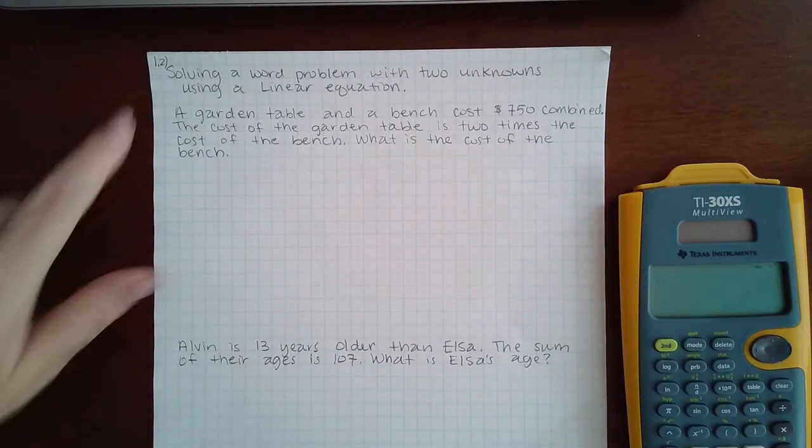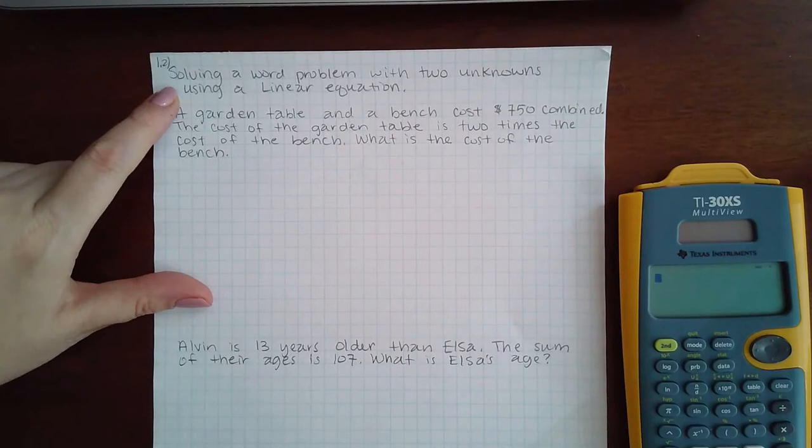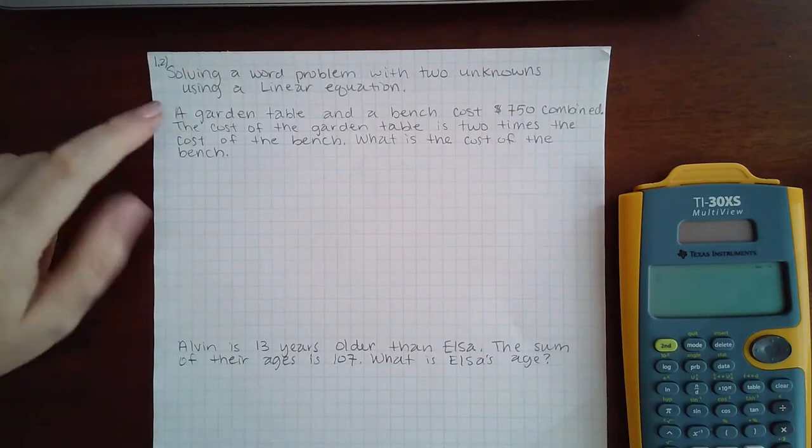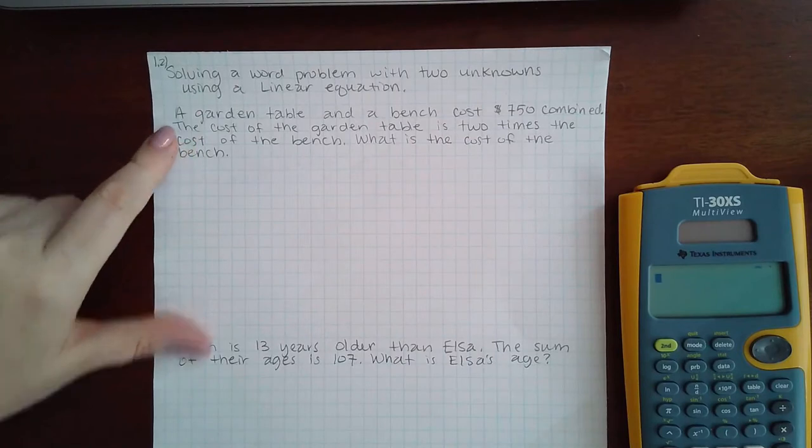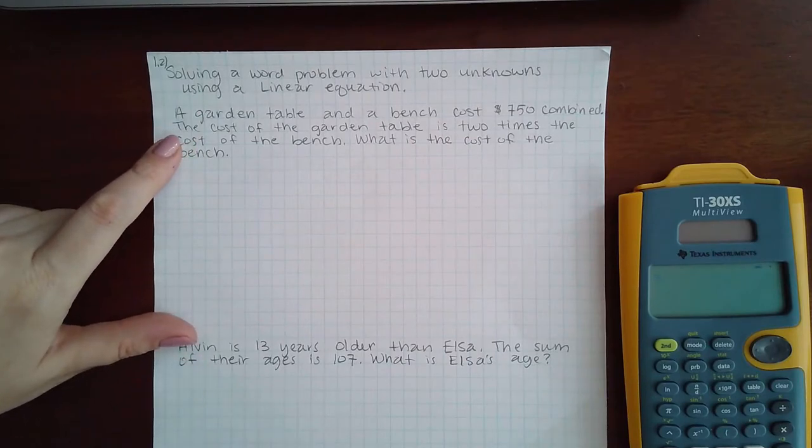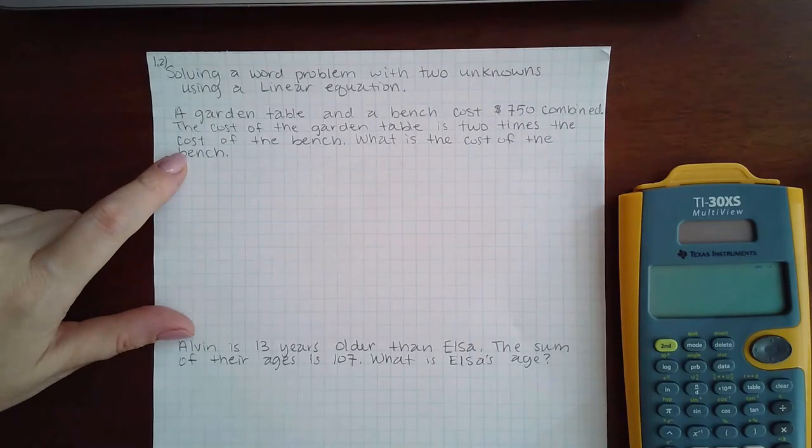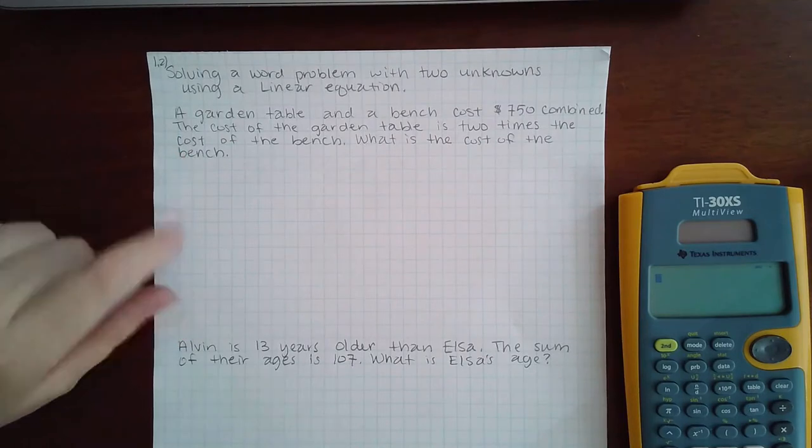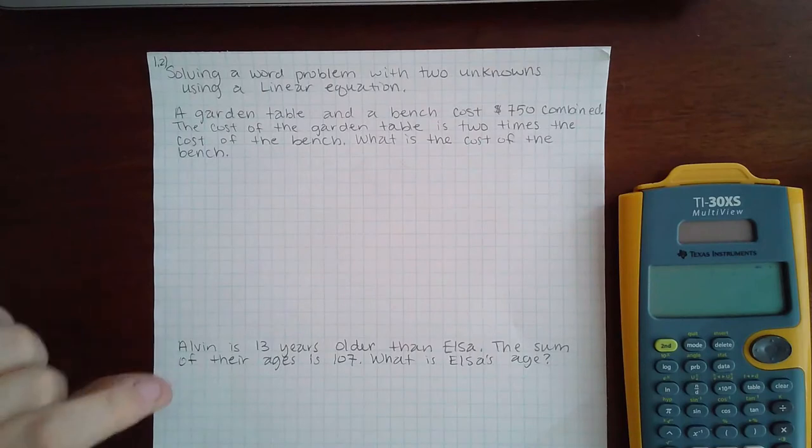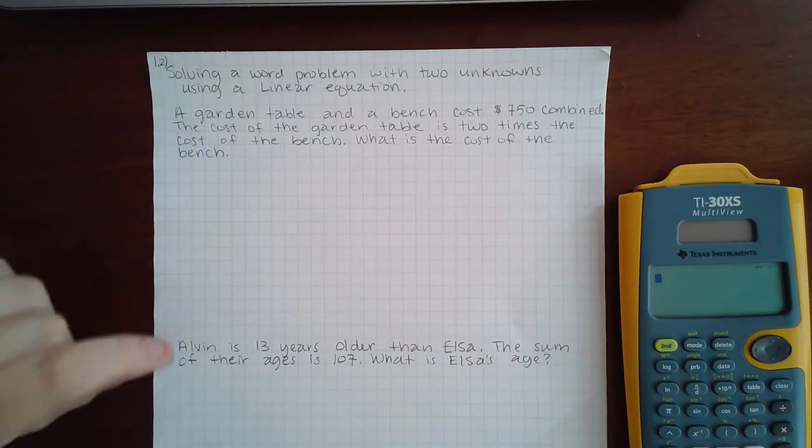Here we have solving a word problem with two unknowns using a linear equation. A garden table and a bench cost $750 combined. The cost of the garden table is two times the cost of the bench. What is the cost of the bench? We have to use algebraic symbols to solve this and write a linear equation.